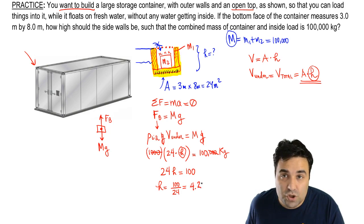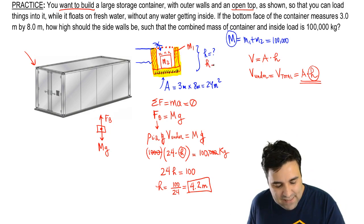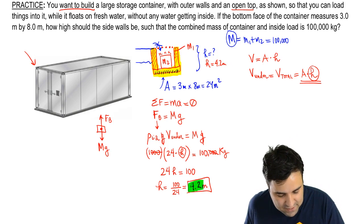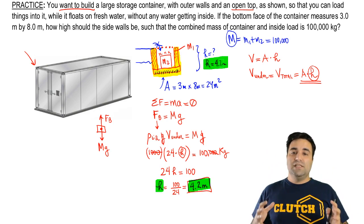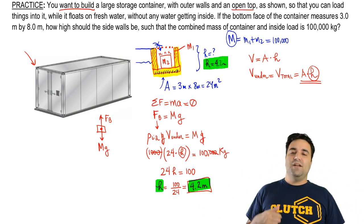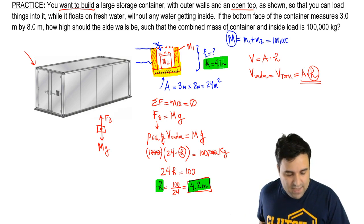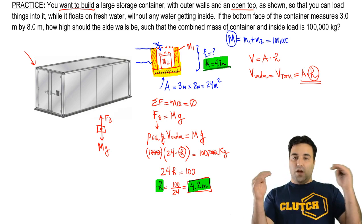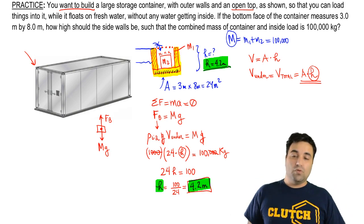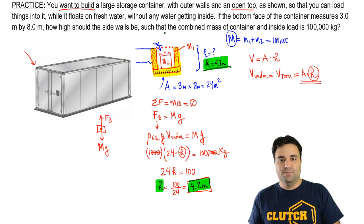So that is the final answer. If the height here is 4.2 meters, if the height of this thing is 4.2 meters, it's going to have enough volume to displace enough water to cause there to be enough buoyant force to cancel all of the weight. Long story short, if the h is 4.2, this thing will float with 100,000 kilograms of total mass without water getting inside of it. That's it for this one, let's keep going.